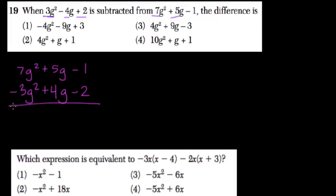And now, since I've already applied the subtraction, I think of combining these as adding, because adding a negative is the same thing as subtracting. So that's easier for me, and I get 4g² + 9g - 3, or plus negative 3. That's choice number 3.